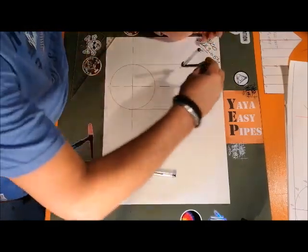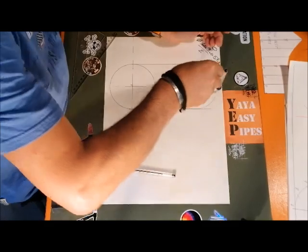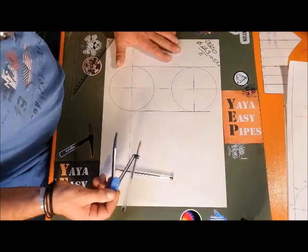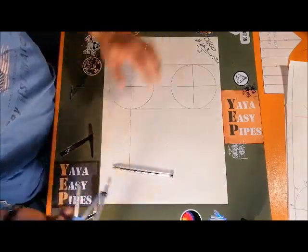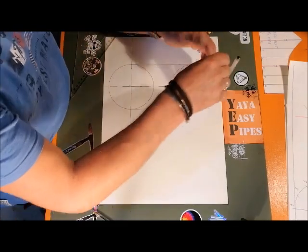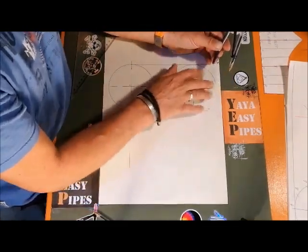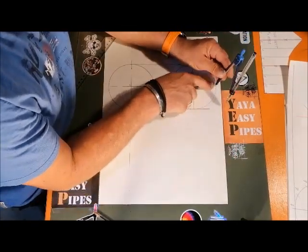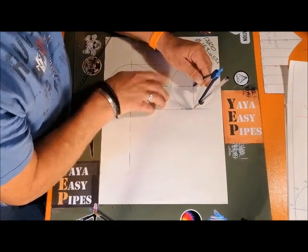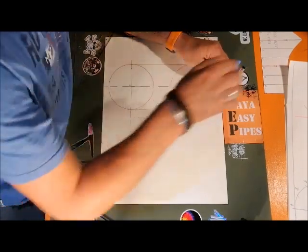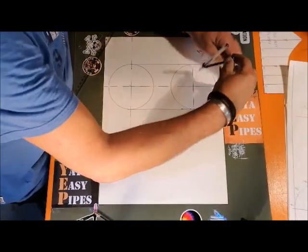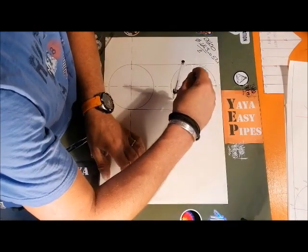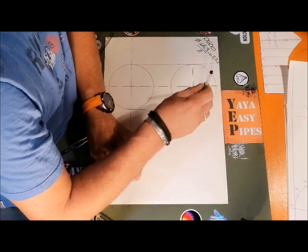En bas c'est le cercle du tube, et ce que je suis en train de tracer, c'est le cercle de mon piquage. Si on regarde, j'ai 4 génératrices. Comme on a dit qu'on allait bosser avec 12 génératrices, on a déjà 4 génératrices, on garde le même écartement. Je vais me mettre sur la première génératrice, un coup à droite, un coup à gauche. Je vais me mettre sur la deuxième génératrice, un coup à droite, un coup à gauche.